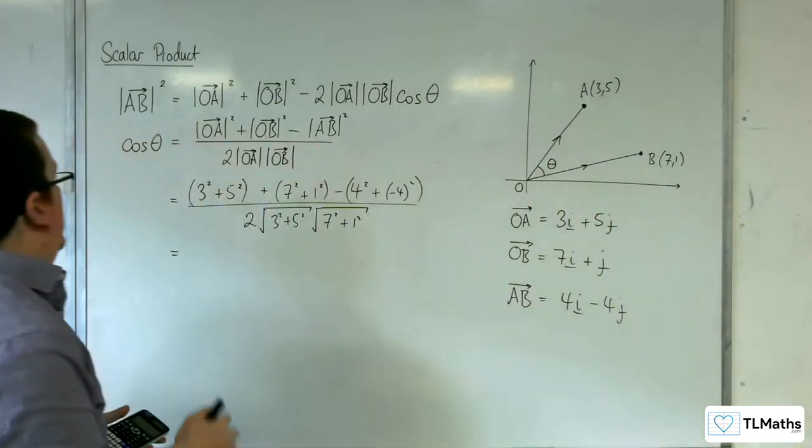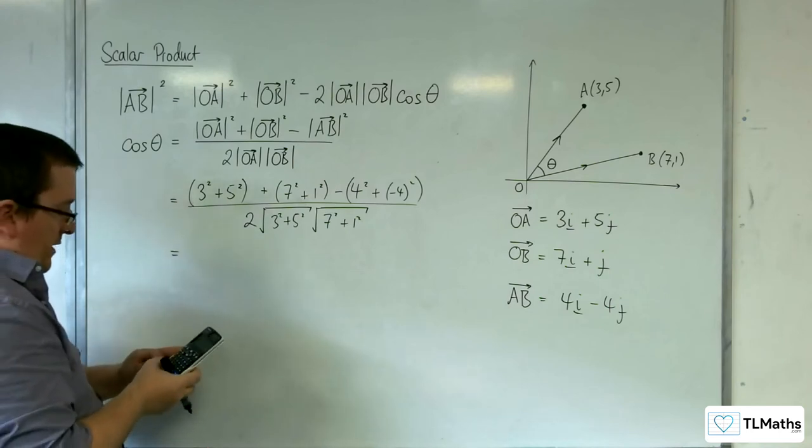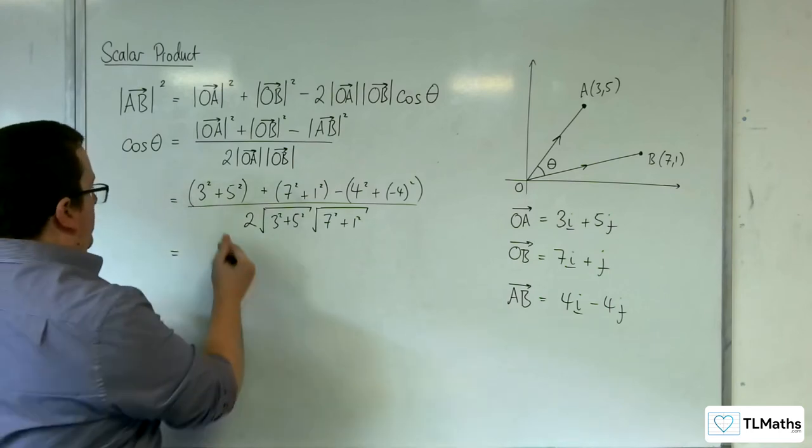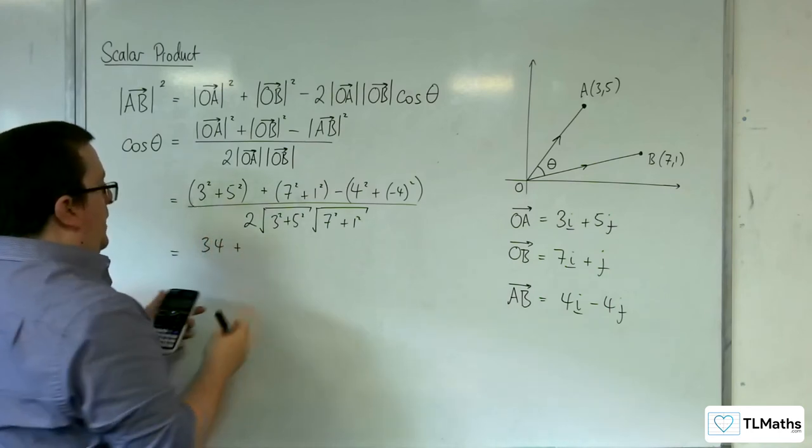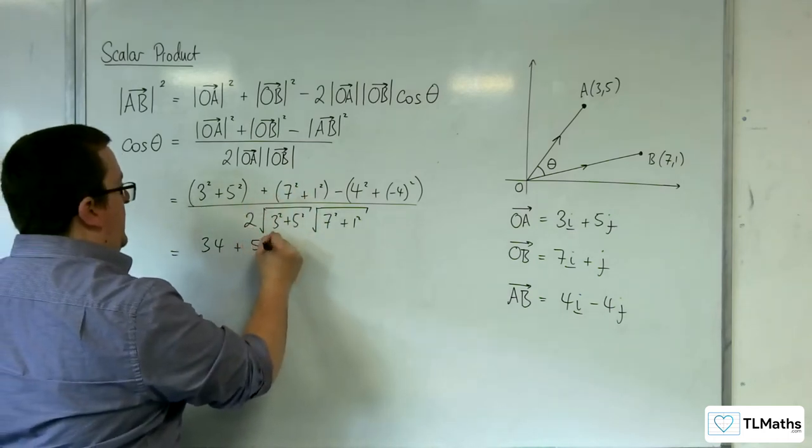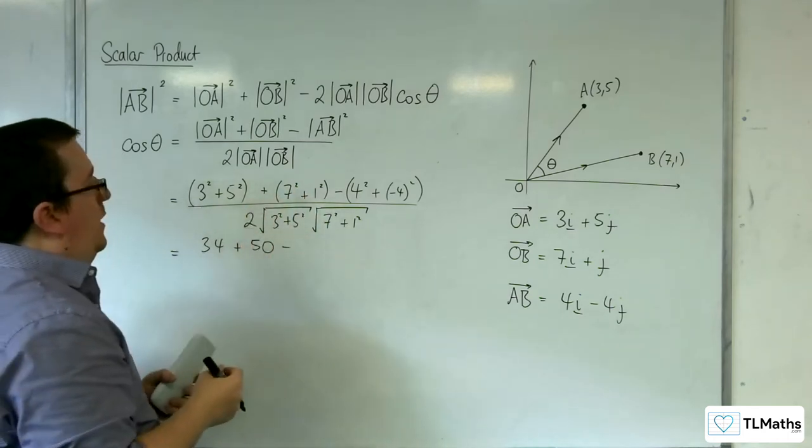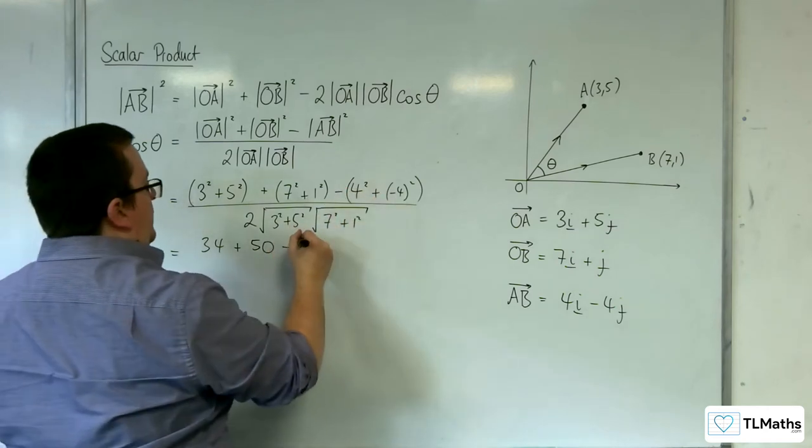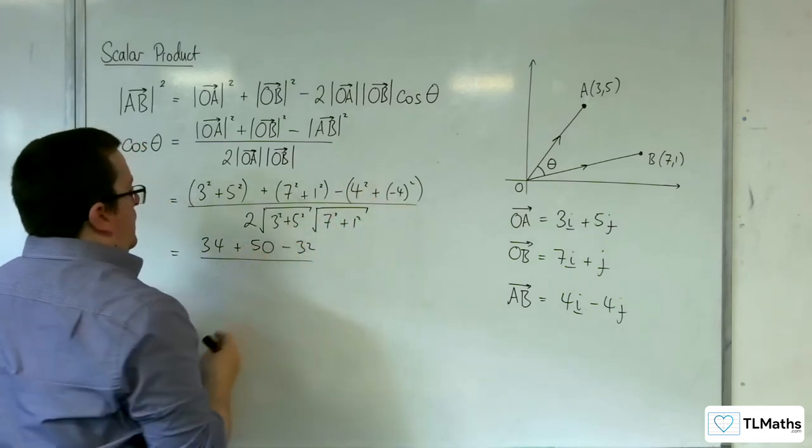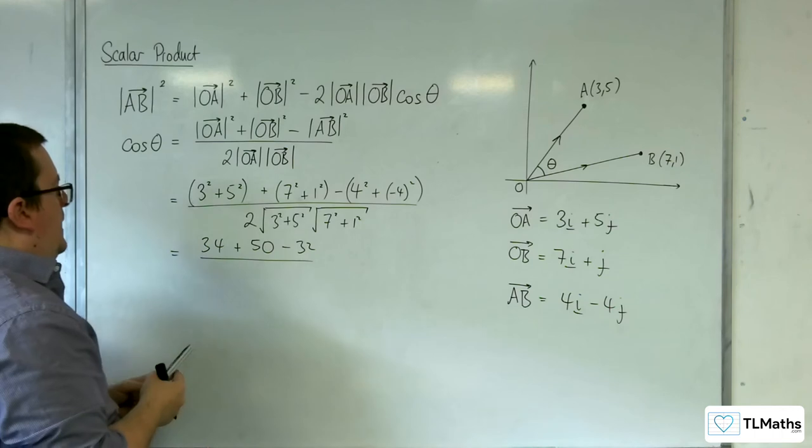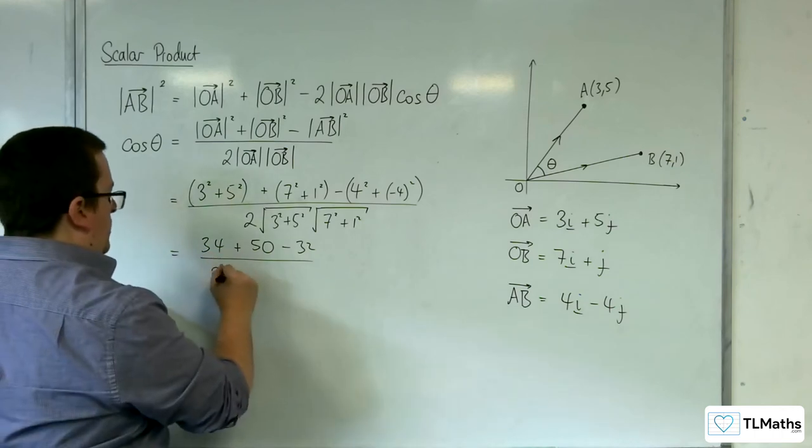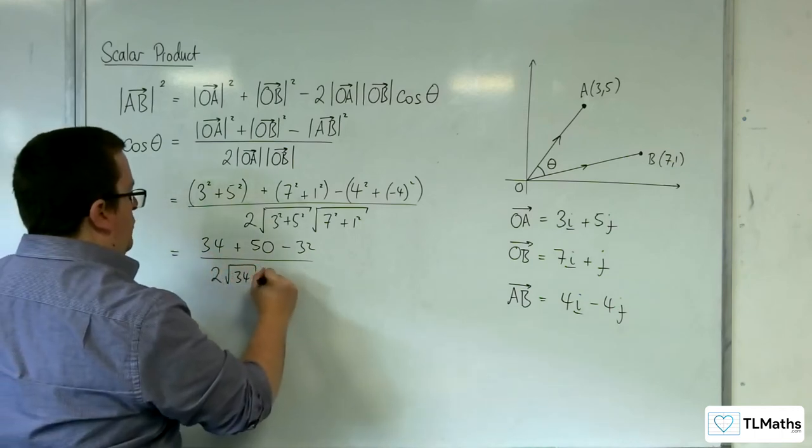So we would have 3 squared plus 5 squared, we're getting 34 plus, what's that, 49 plus 1, so 50, and then take away 16 plus 16, so take away 32, all over 2 root 34 root 50.